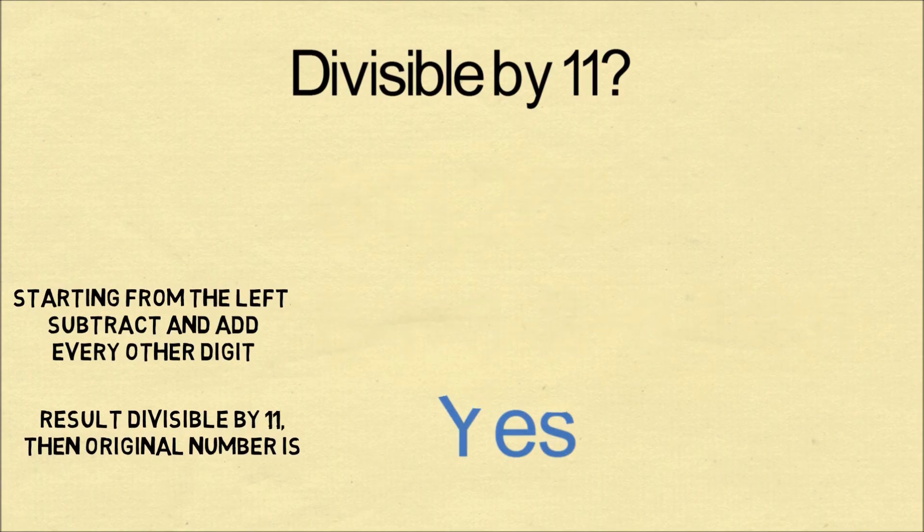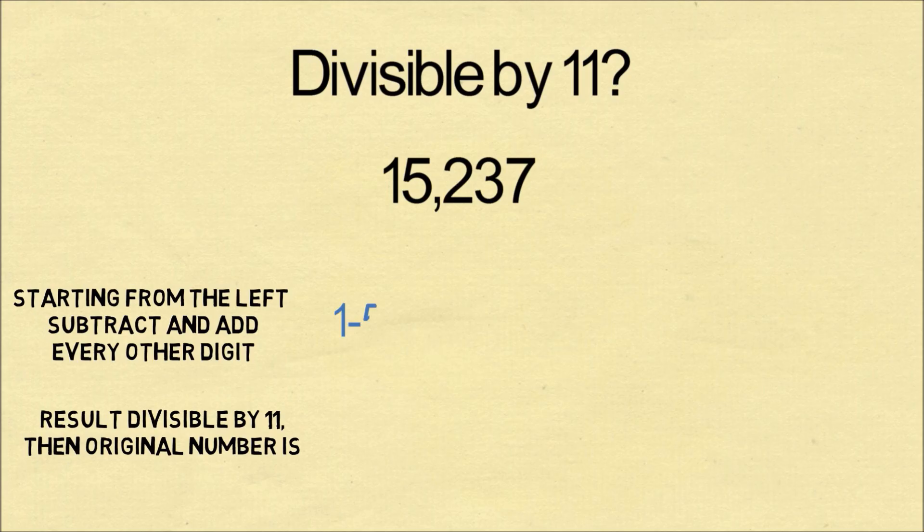Let's use this trick to do a couple of examples. Let's do 15,237. In our heads we calculate the alternating sum is 2. 2 is not divisible by 11, so we know the original number is not divisible by 11.